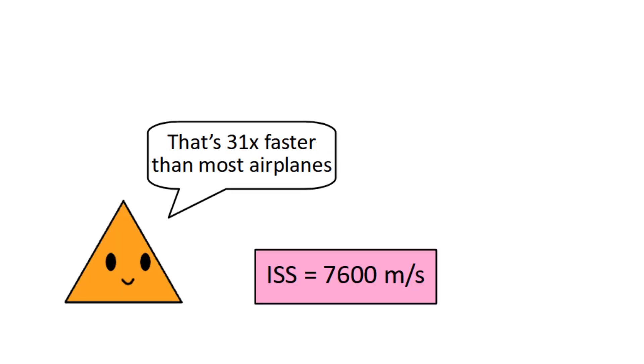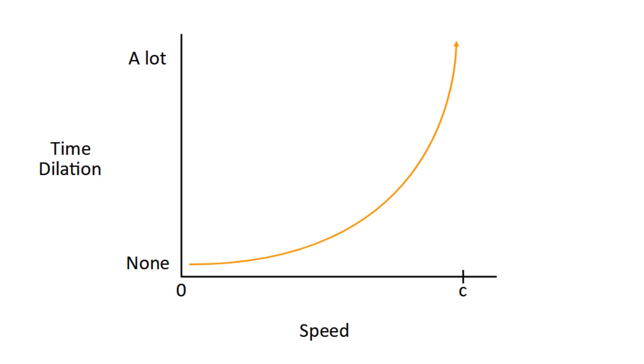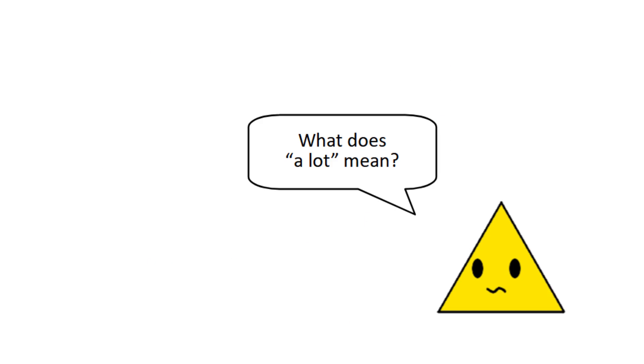although 7600 meters per second is a lot to us, it's still basically nothing compared to the speed of light. As your speed gets closer to the speed of light, these effects become more and more significant, but how much more? How do we actually quantify the amount of time dilation?